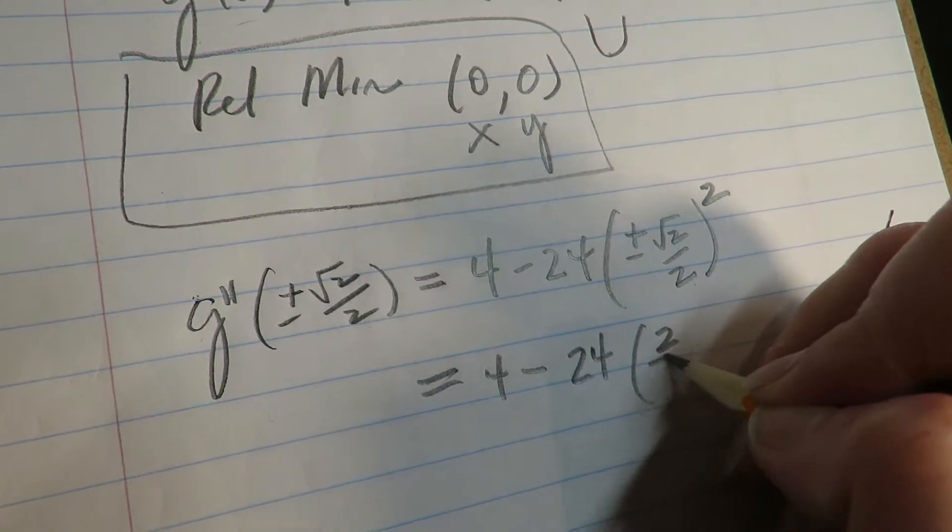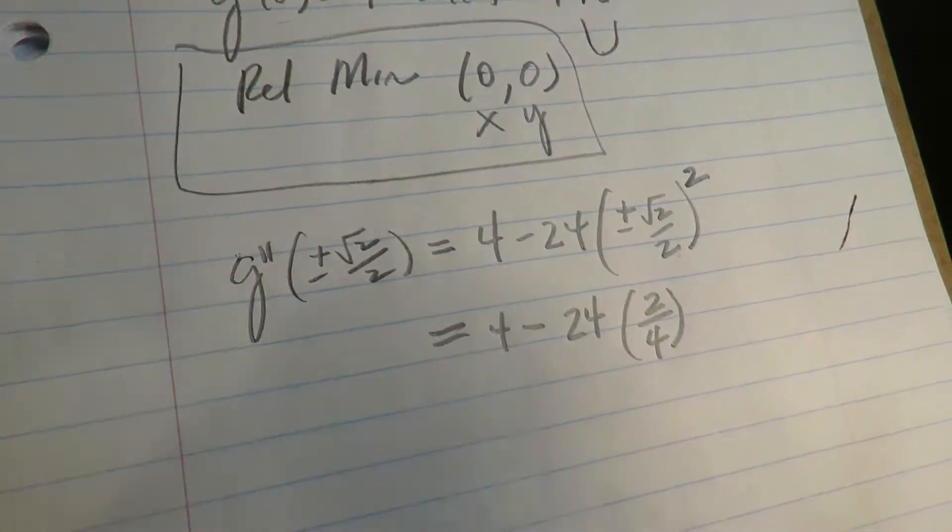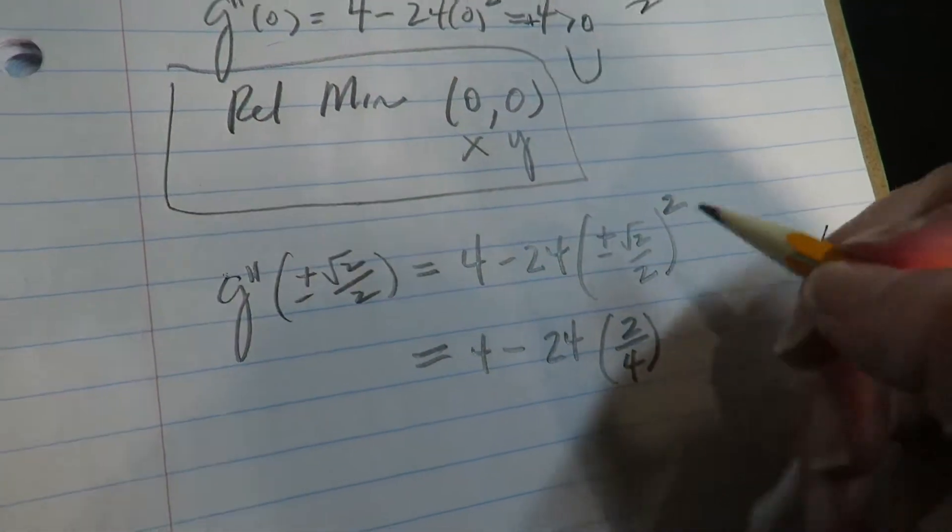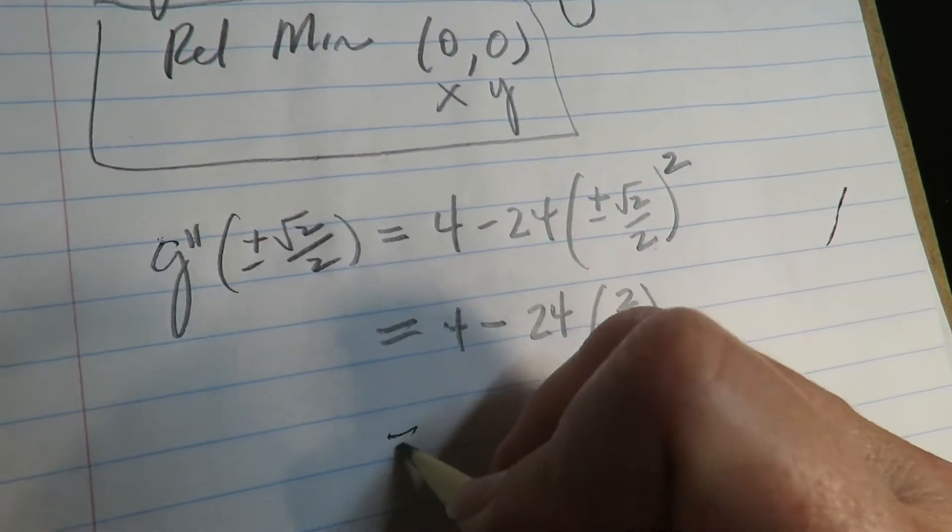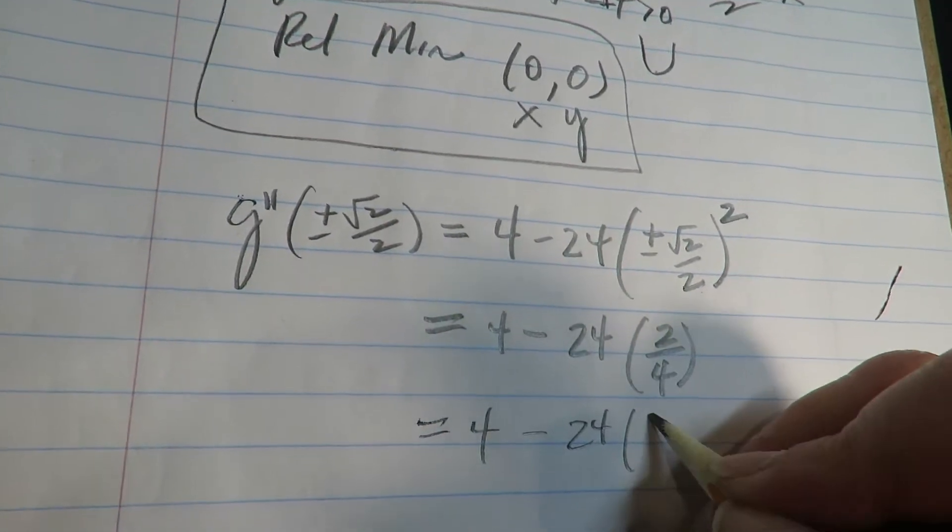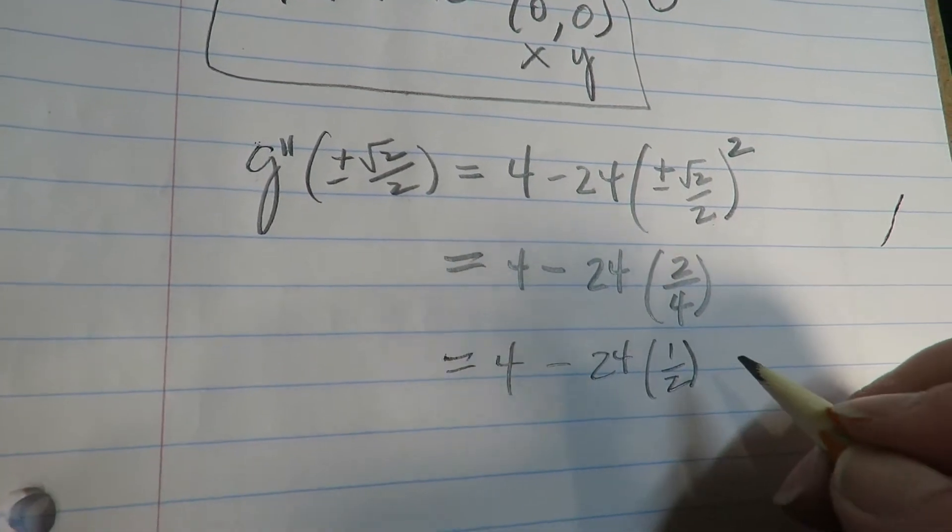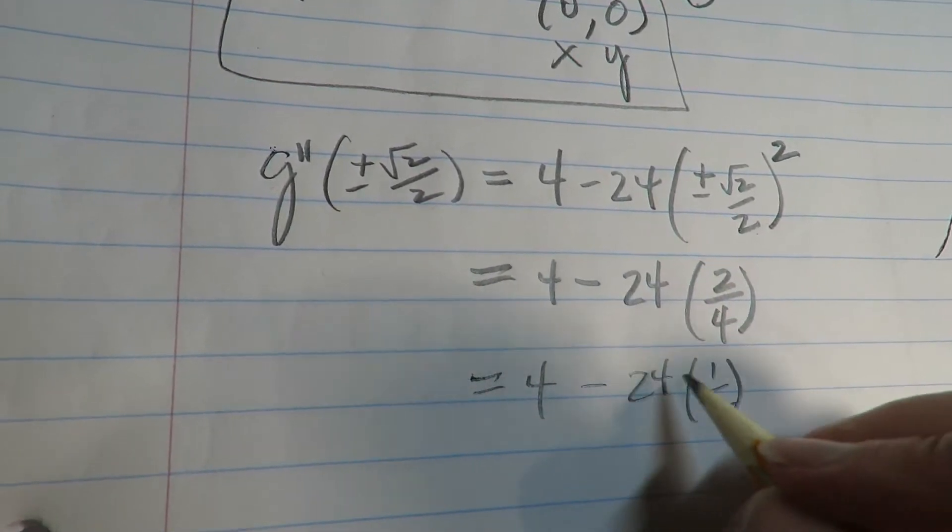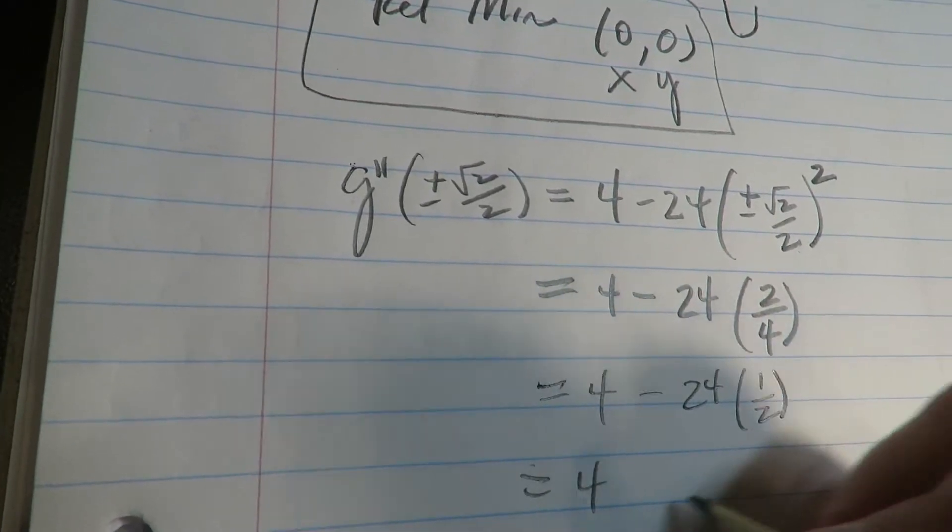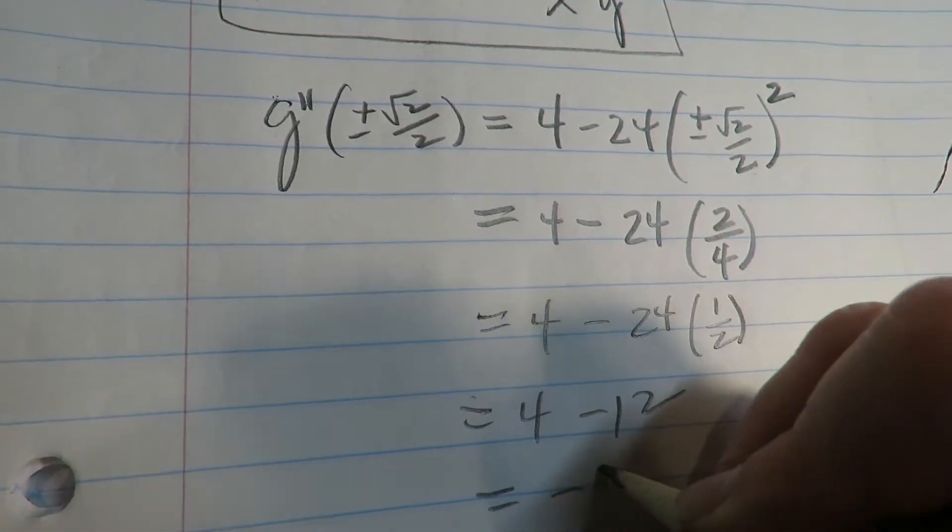Right, because you're squaring it, the negative is going to go away, so this squared is going to end up being 2/4 or 1/2. I would have just rather written it 1/2. So then 24 times 1/2 is negative 12, this is negative 8.